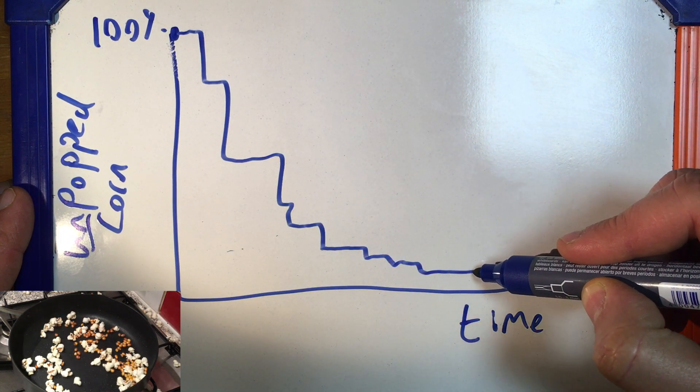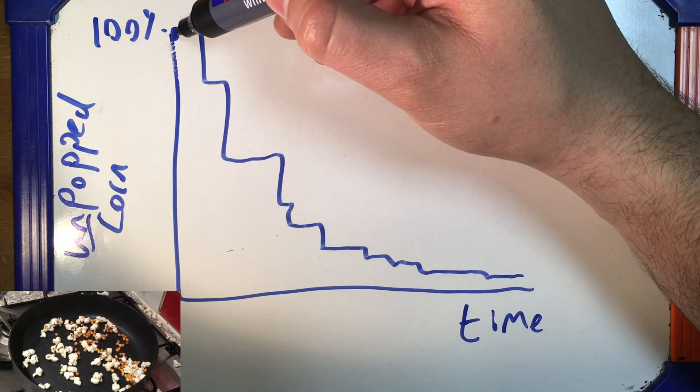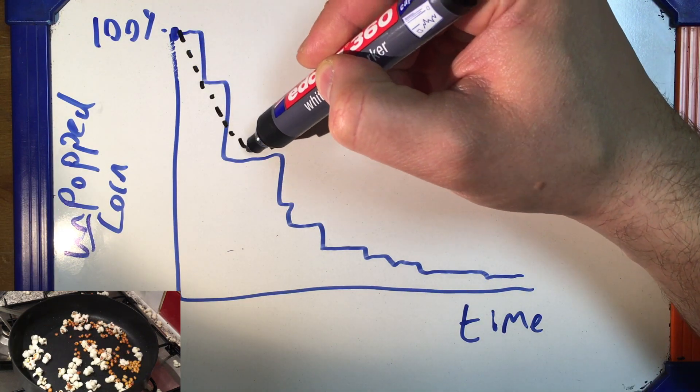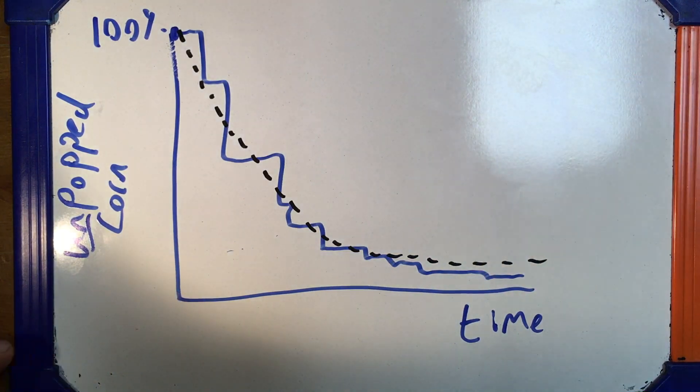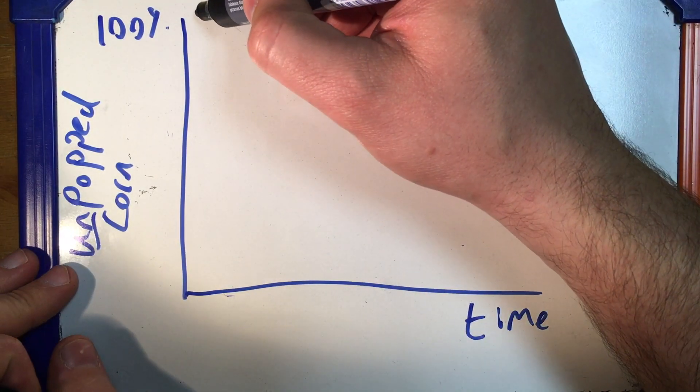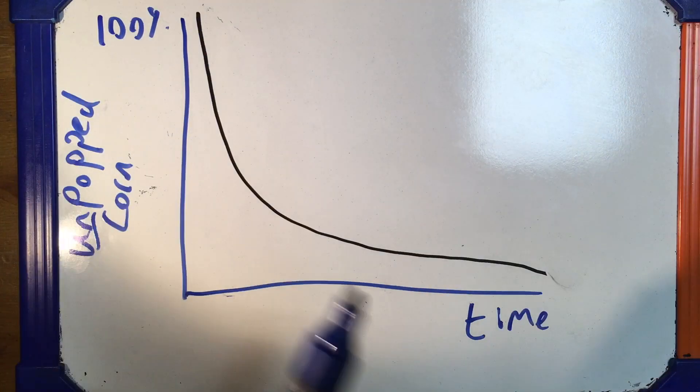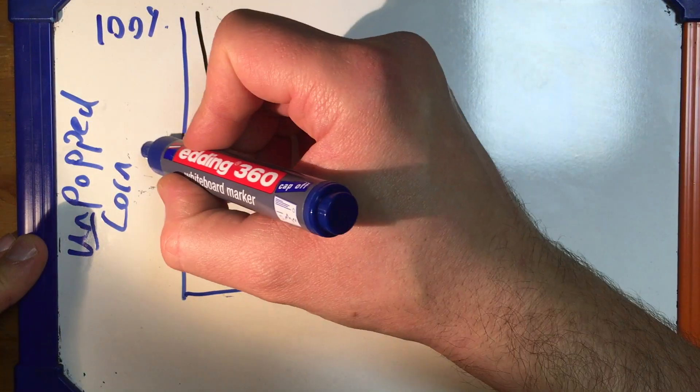And we'll get to the end where you've got that stubborn one that just refuses to go no matter how much you cook. If we repeated this a whole load of times and took an average, it wouldn't look like a jagged line. It would look like a smooth curve. Kind of like this.